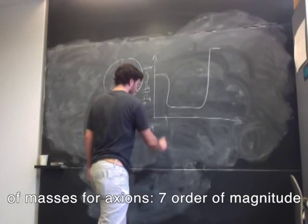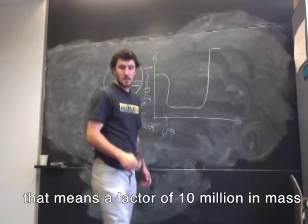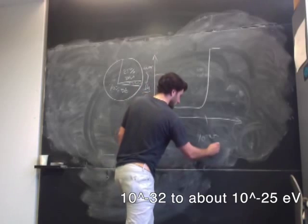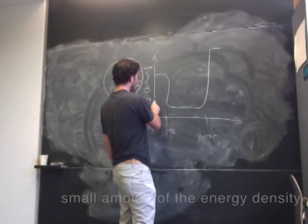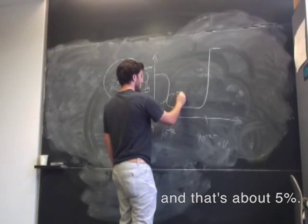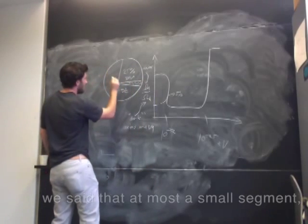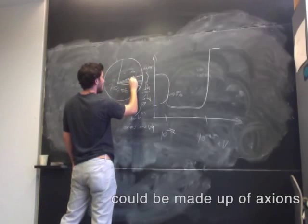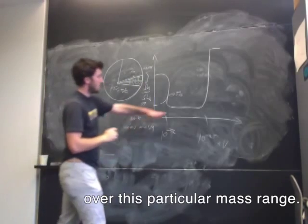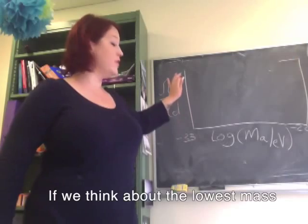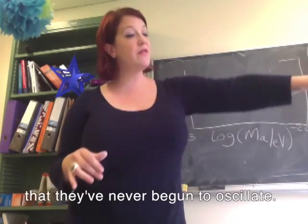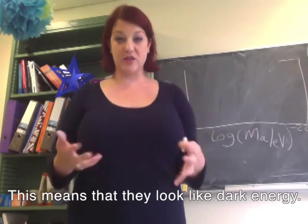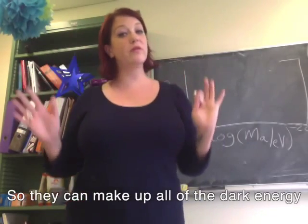We found that over a large range of masses for axions — over seven orders of magnitude, that means a factor of 10 million in the mass, from 10 to the minus 25 up to about 10 to the minus 32 electron volts — the axions are only allowed to be a very small amount of the energy density, about 5%. So in terms of this pie, at most a small segment about this large could be made up of axions over this particular mass range. If we think about the lowest mass, these are axions that are so light that they've never begun to oscillate. For the entire age of the universe, they have been lighter than the Hubble mass, which means they look like dark energy. We can't tell them apart from dark energy, so they can make up all of the dark energy in the universe.